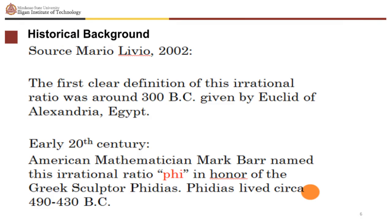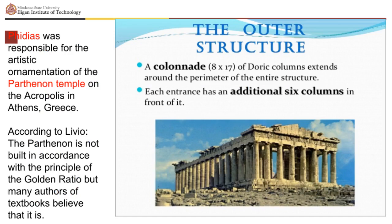The first clear definition of this irrational ratio was around 300 BC, given by Euclid of Alexandria, Egypt. In the early 20th century, American mathematician Mark Barr named this irrational ratio phi, in honor of the Greek sculptor Phidias. Phidias lived circa 490 to 430 BC, and was responsible for the artistic ornamentation of the Parthenon temple on the Acropolis in Athens, Greece.